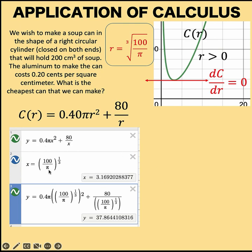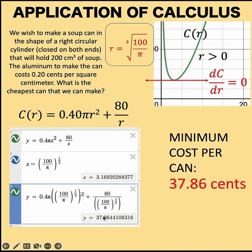The cube root of 100 over π is approximately equal to 3.17. So the value of the radius that will give us the cheapest can is r = 3.17 centimeters. Plugging in this value to our cost function gives us a minimum cost per can of 37.86 cents. This is the cost of the cheapest can that we can make given this situation.